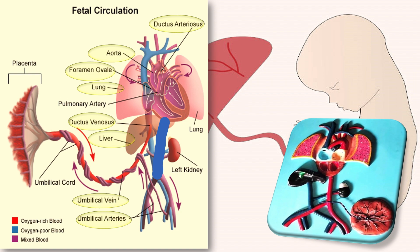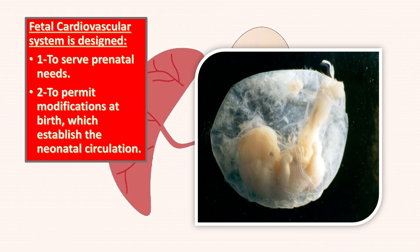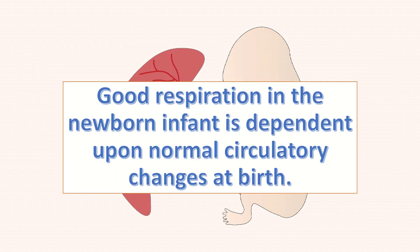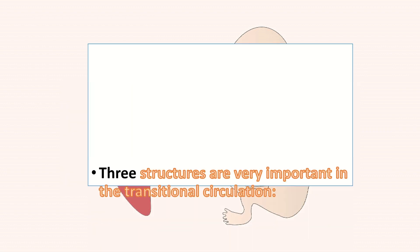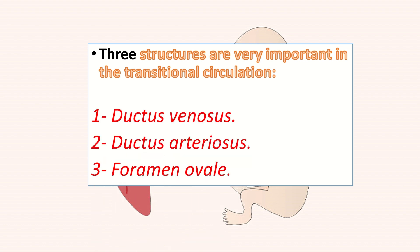The main aim of the fetal cardiovascular system is that it is designed to serve the prenatal needs, and it is also designed to permit the modifications at birth which establish the neonatal circulation. Good respiration in the newborn infant is dependent upon the normal circulatory changes at birth. Three structures are very important in the transitional circulation: the ductus venosus, ductus arteriosus, and foramen ovale.